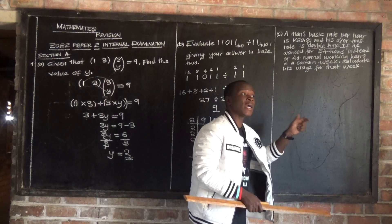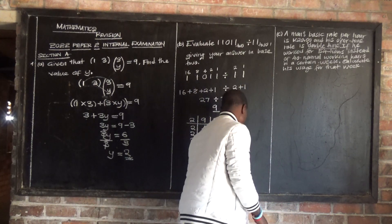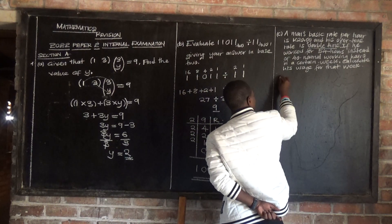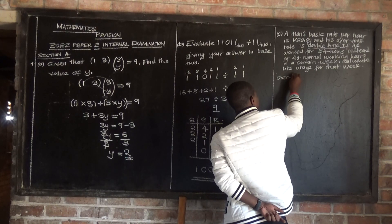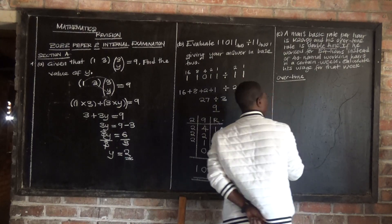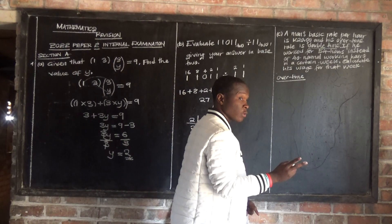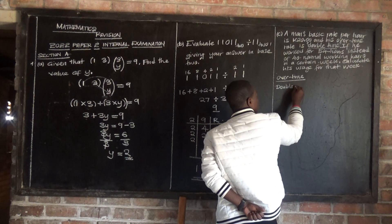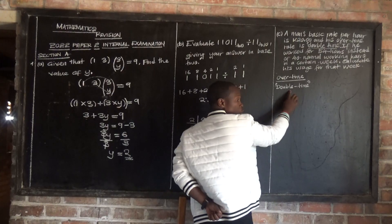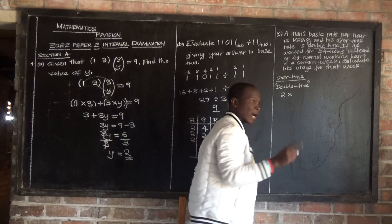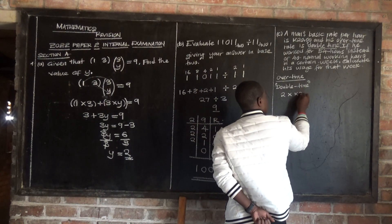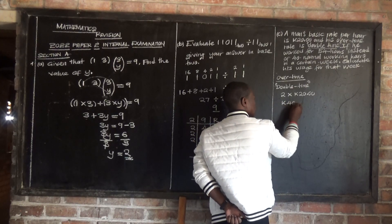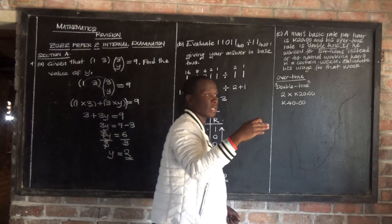So we are going to find his overtime rate. The overtime rate is double time, meaning double the normal hourly rate. Double means multiply by 2. So the overtime rate is 2 multiplied by the basic rate of 20 cedis per hour. So 2 times 20 gives 40 cedis. So 40 cedis per hour is the overtime rate.